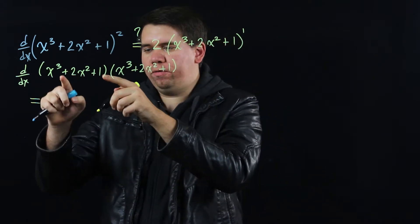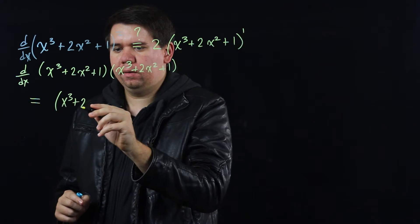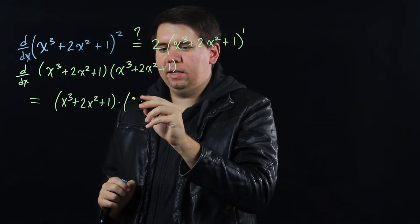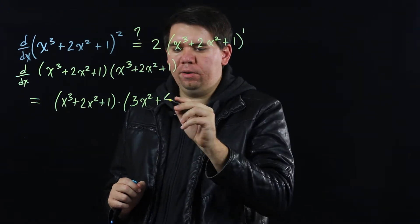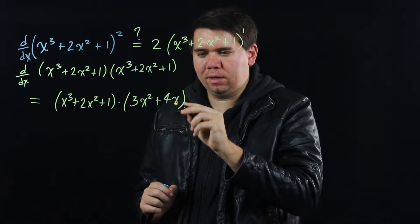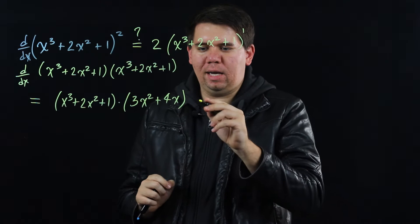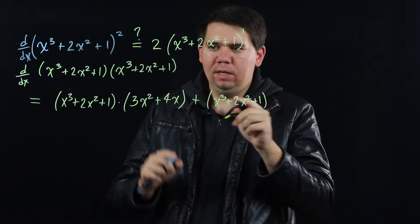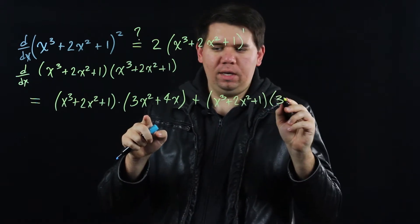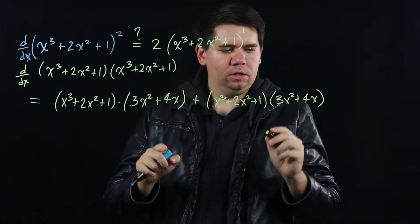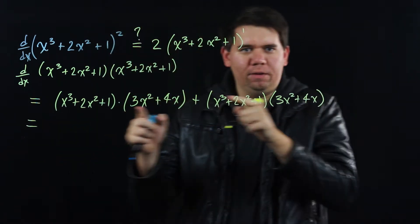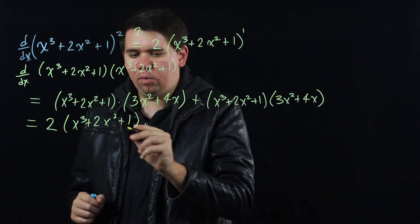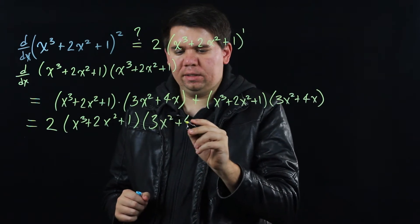By the product rule, this is going to be: hold the first — leave the first function the same — times the derivative of the second function. The derivative of the second function is 3x squared plus 4x plus 0; the 1 vanishes because it's a constant. Plus hold the second, x cubed plus 2x squared plus 1, times the derivative of the first, which is 3x squared plus 4x just as before. We have two copies of the same thing, so we get 2 times (x cubed plus 2x squared plus 1) times (3x squared plus 4x).